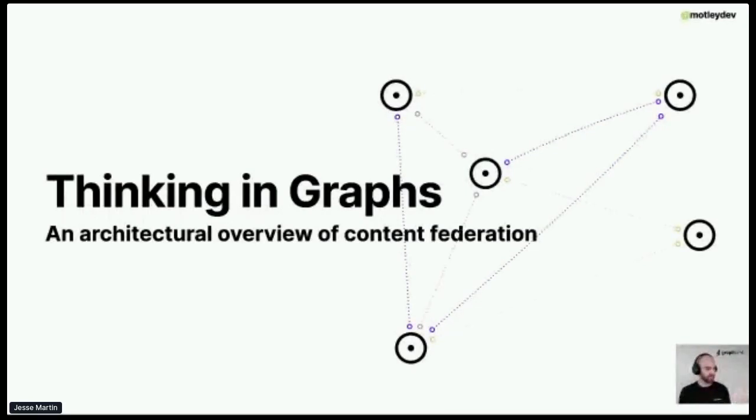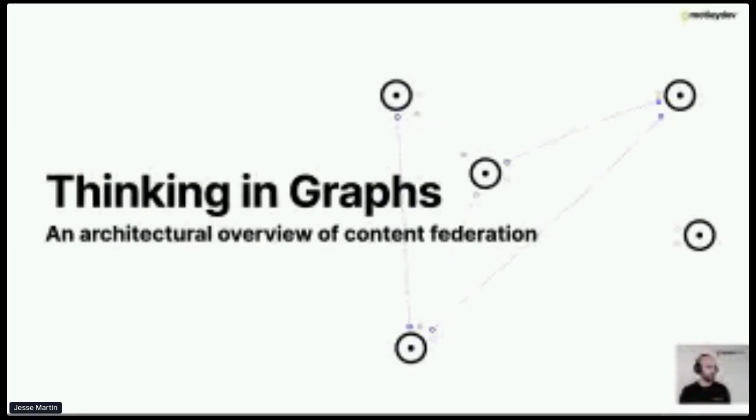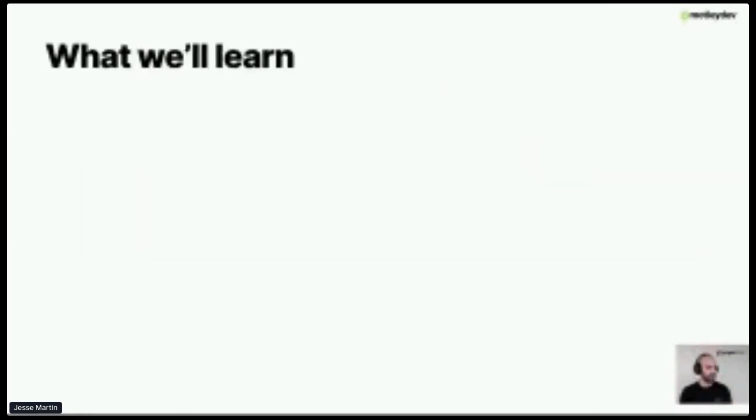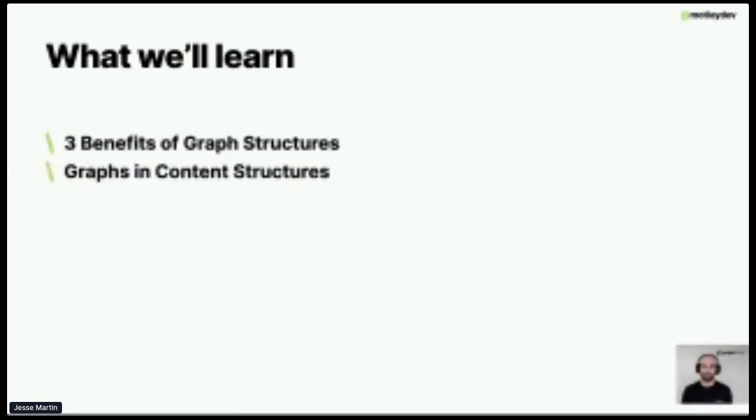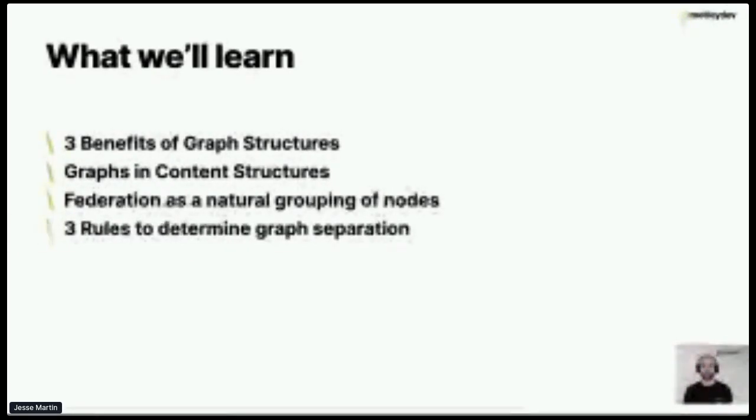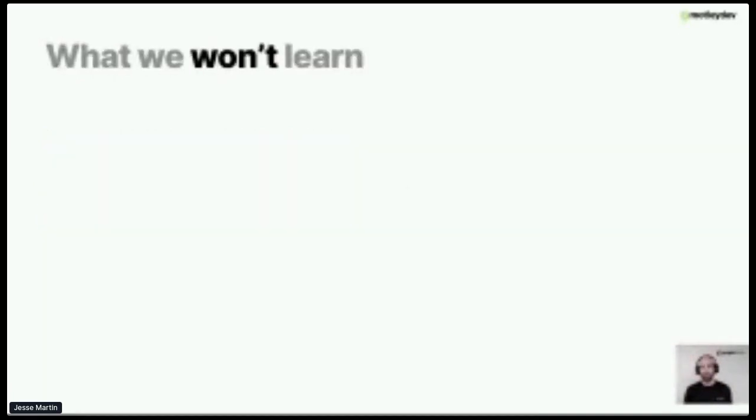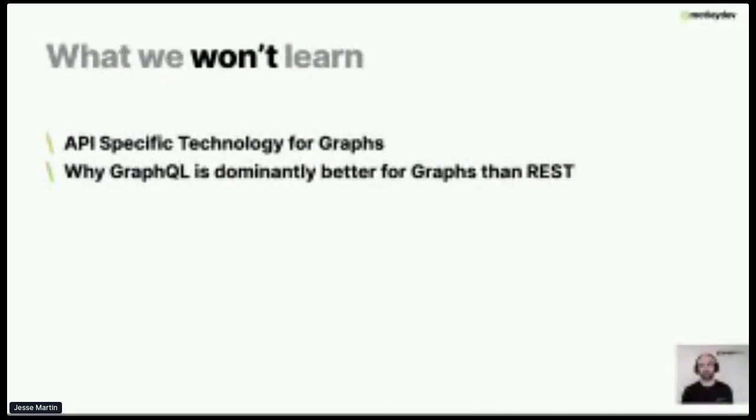So, thinking in graphs. This is a high-level architectural overview of content federation. What we're going to learn today: three benefits of graph structures, graphs in content structures, federation as natural groupings of nodes, and three rules to determine graph separation. What we're not going to learn is API-specific technology for graphs, and why GraphQL is dominantly better for graphs than REST. I just had to do that because we're a GraphQL company. I'm not actually wanting to start a flame war, but that's my joke for the day.